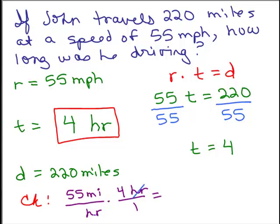And if you multiply those together, you see how the hours cancel, and you get 55 times 4. Well, 55 times 2 is 110, and then multiply that by 2. That's 220 miles. And that agrees with our distance. So you can see that 4 hours makes sense.